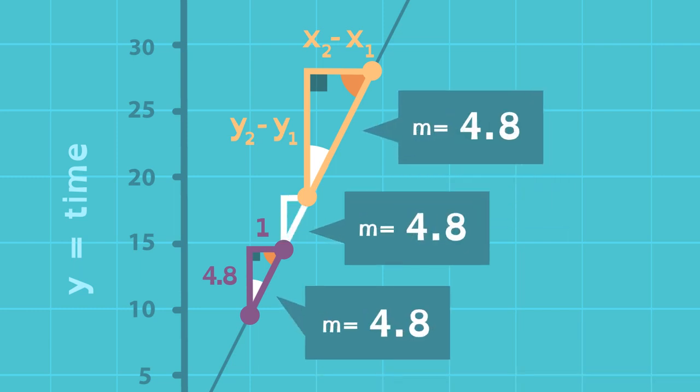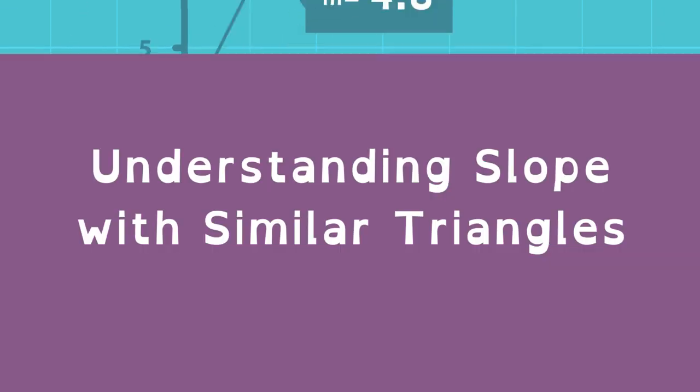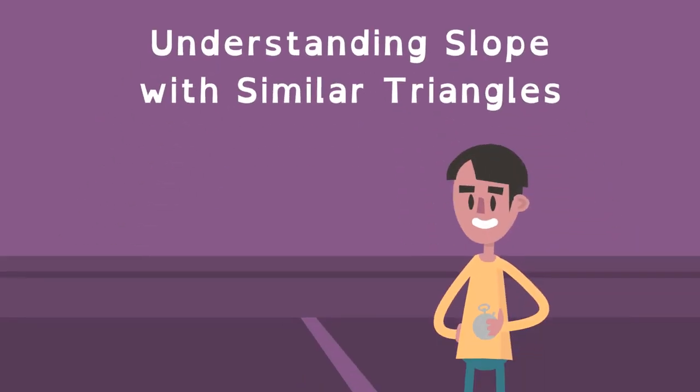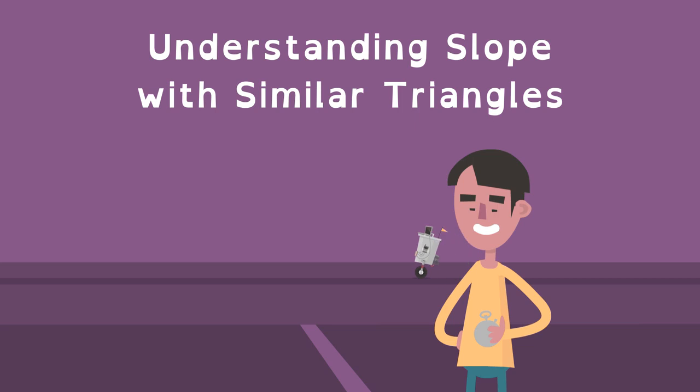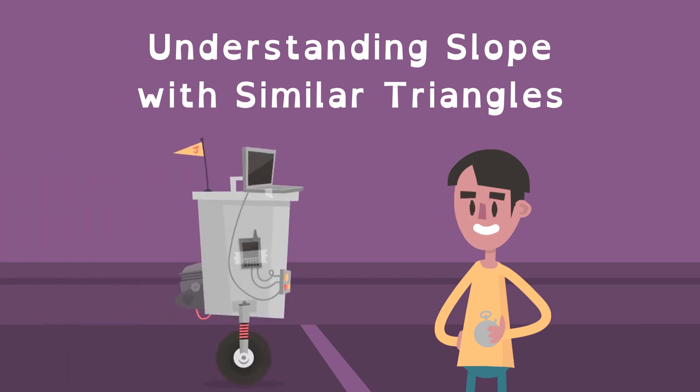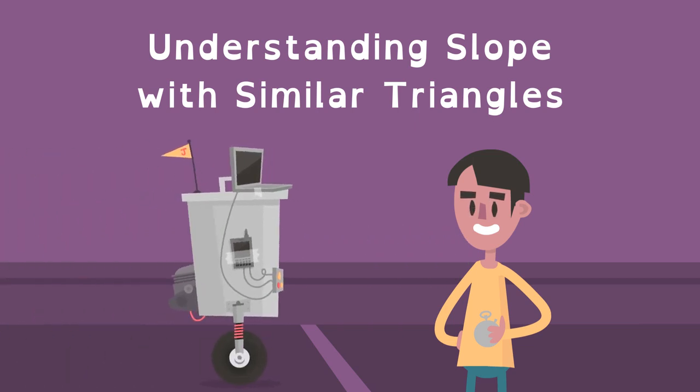This proves that the slope of any triangle on the line will be 4.8. Understanding slope and similar triangles helps Jason show that his robot moves at a constant speed of 4.8 minutes per lap. Nice going Jason!